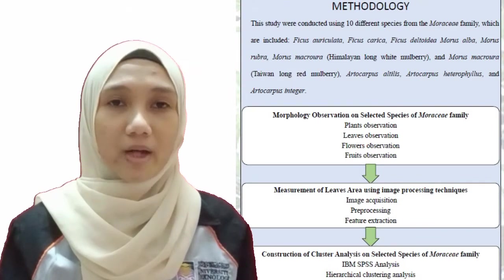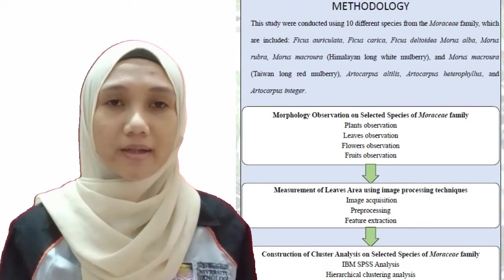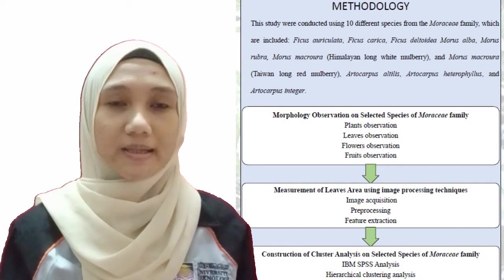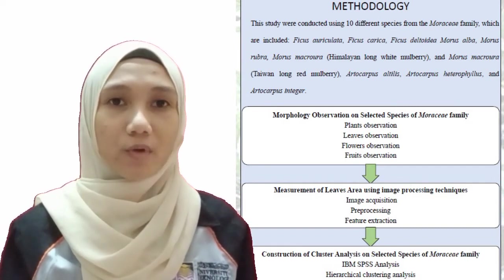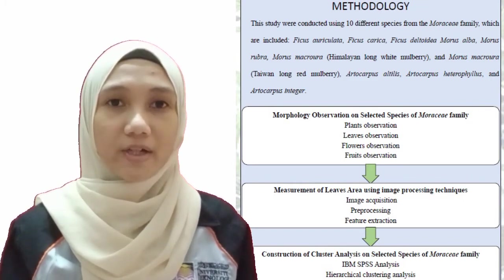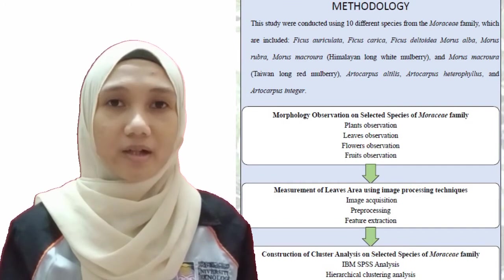Three different plants of the same selected species were used as a replicated sample. About 90 leaves were collected from 10 species in this study. The morphological observation was performed to observe the plant, leaf, flower and fruit of each species specifically. The observation was recorded as a result.